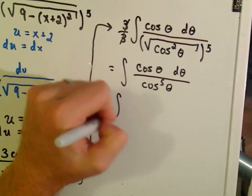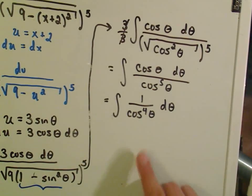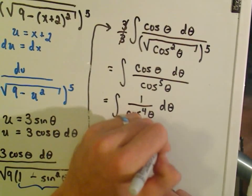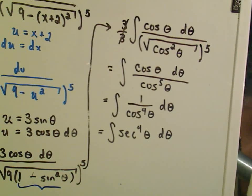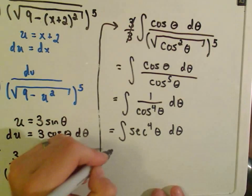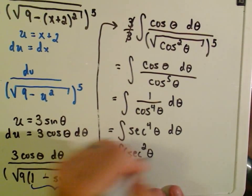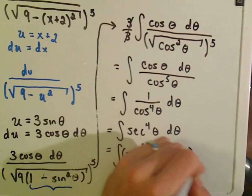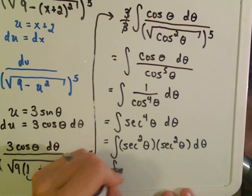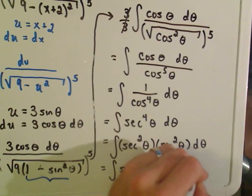Well, now we can cancel things out. This will be 1 over cosine to the 4th theta, d theta. And 1 over cosine is secant, so really we have to integrate secant to the 4th theta, d theta. We've done a lot of work here so far. And now the question is, how do you integrate secant to the 4th theta? Well, I can rewrite that as secant squared theta times secant squared theta. And remember, we have a trig identity for secant squared theta that says that's equal to 1 plus tangent squared theta, d theta.